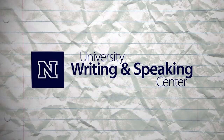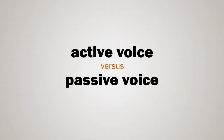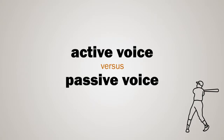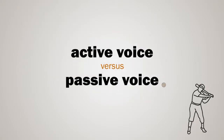Hi, this is Tony from the UNR Writing and Speaking Center. Active versus passive voice is often explained using a single sentence like 'Sam hit the ball,' which is active, compared to 'The ball was hit by Sam,' which is passive.